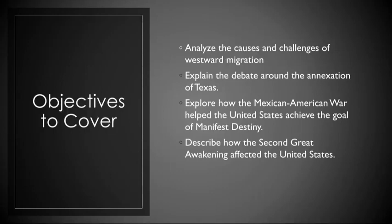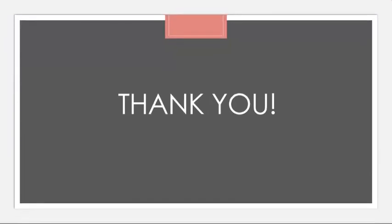In conclusion, Unit 6 highlights the transformative period in early 1800s America. It discusses the causes and challenges of westward expansion, the debate surrounding the annexation of Texas, the role of the Mexican-American War in Manifest Destiny, and the impact of the Second Great Awakening. These events and developments shaped the nation's identity and set the stage for further significant changes in the years to come. Thank you, and I look forward to working with you all in class.